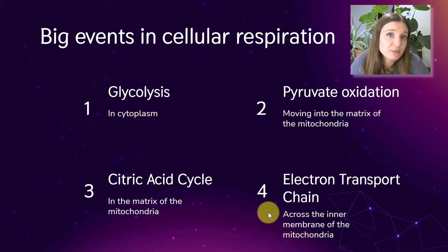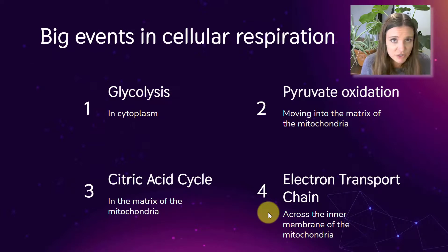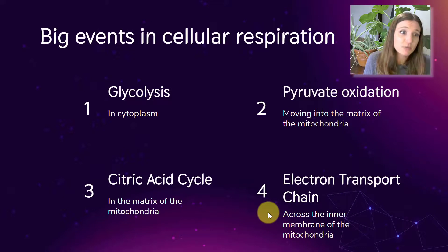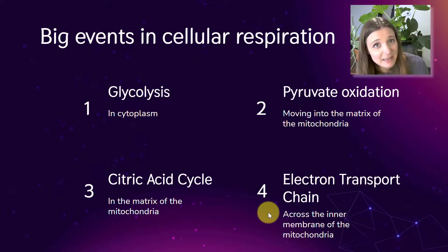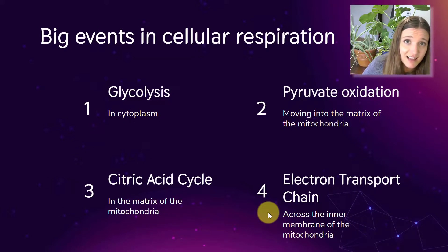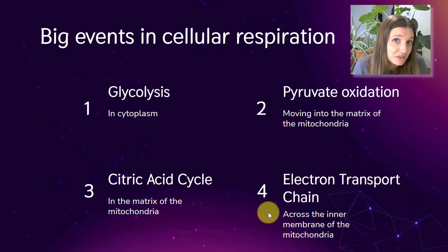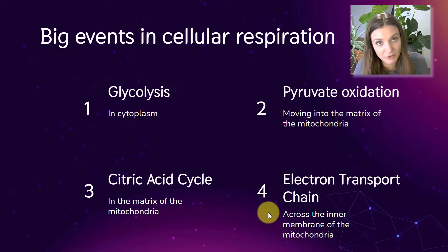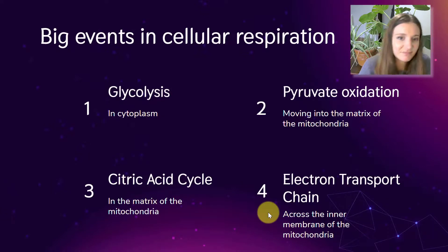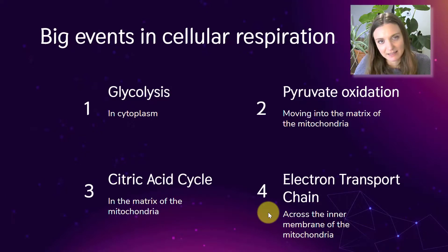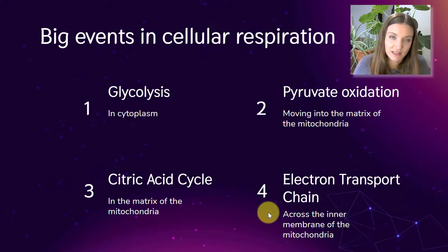We're going to break cellular respiration up into four steps. First step: glycolysis — sugar breaking — happens in the cytoplasm. Second step: pyruvate oxidation, which happens as the products of our first step move into the mitochondria. Third: the citric acid cycle, where we complete the oxidation of glucose — stripping all the electrons off — happening in the matrix of the mitochondria. Lastly, the electron transport chain and ATP synthase, happening across the inner membrane of the mitochondria, where those inner folds are.